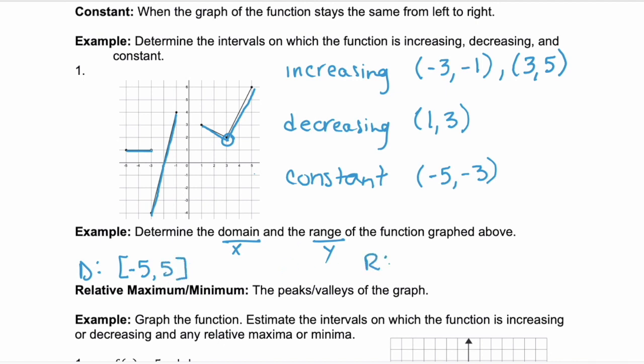Then our range, those are our y values. The lowest y value we ever see on our graph is negative 4, and it's included in this graph. And the largest y value we see is up here at positive 6.